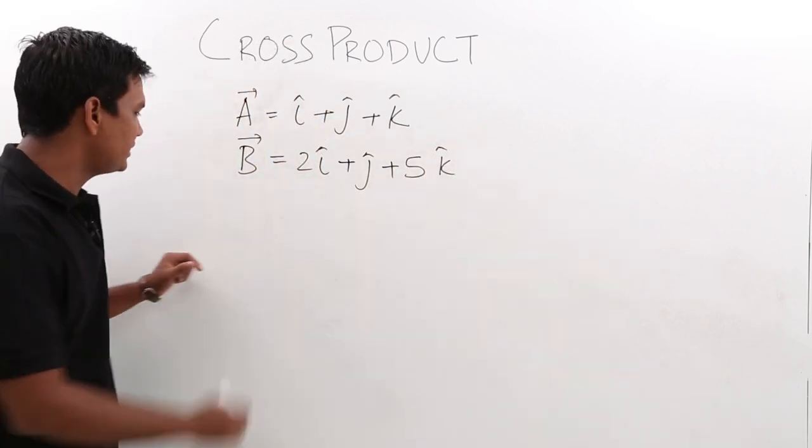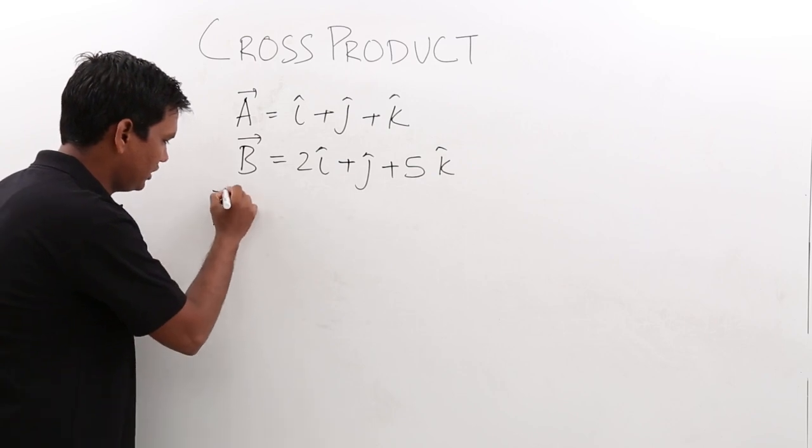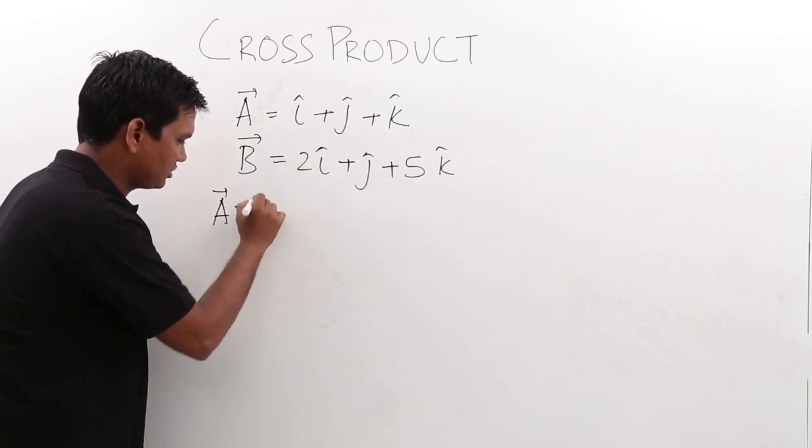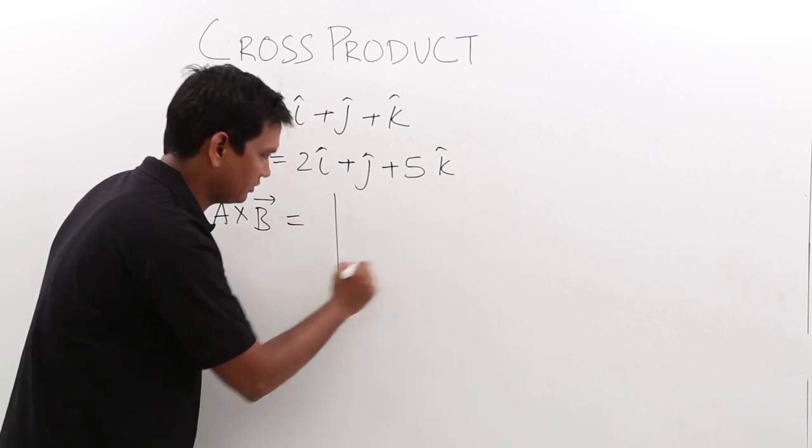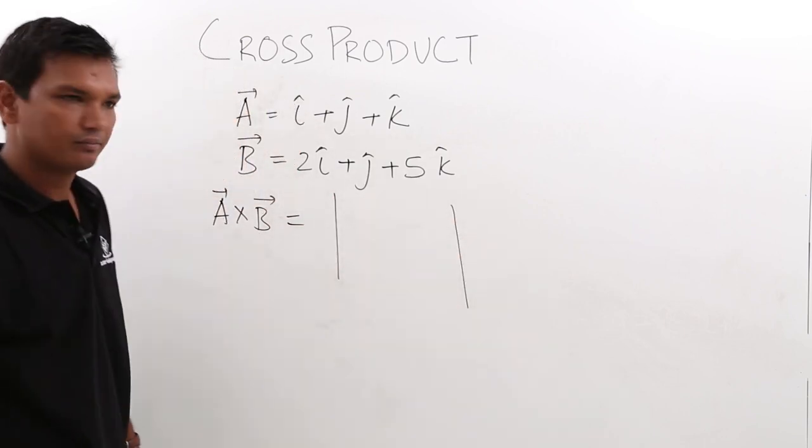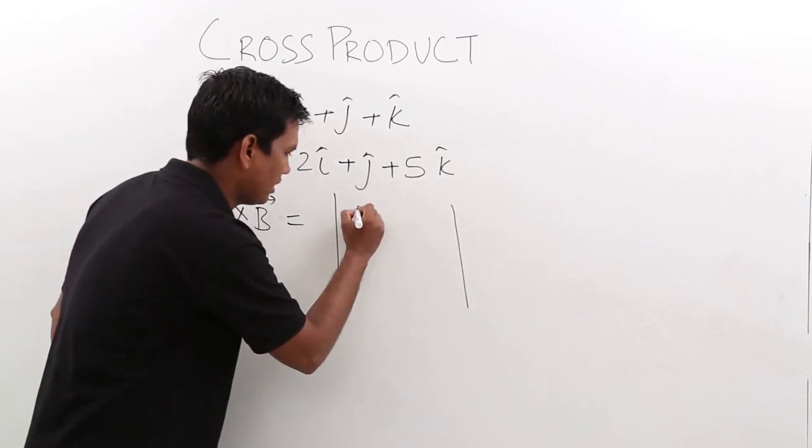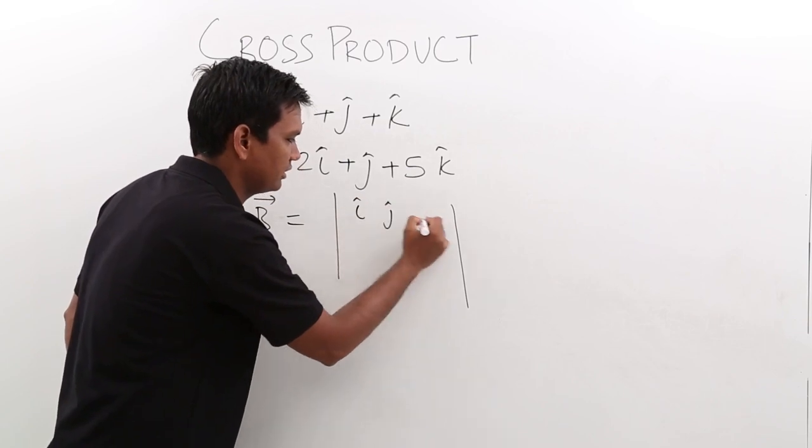Now, we have to find a cross b. A cross b would be nothing but we have to draw the matrix. We have to write i here, j here and k here.